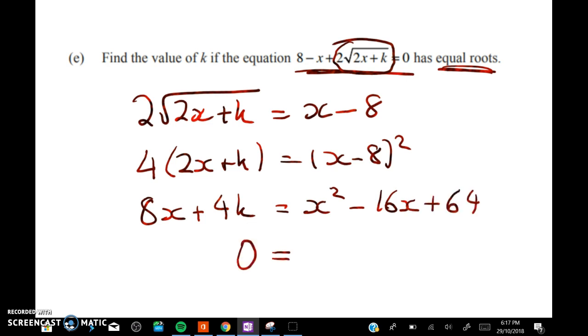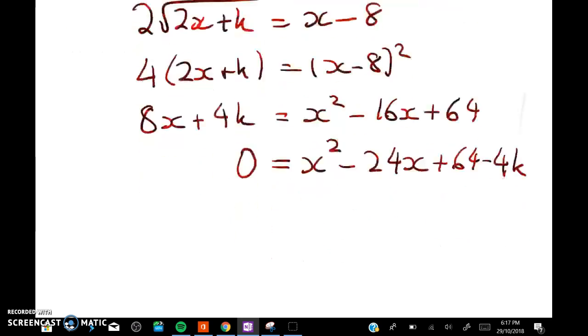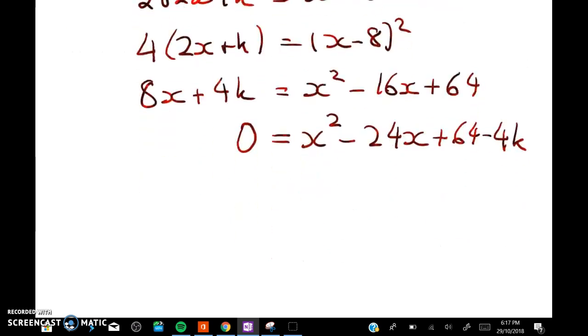To solve a quadratic it needs to equal 0 so that I can factorize or apply the quadratic formula. So we have 0 equals x squared minus 24x plus 64 minus 4k. I've written it in that order on purpose so that we can quickly see that a is equal to 1, b is negative 24, and c is 64 minus 4k.